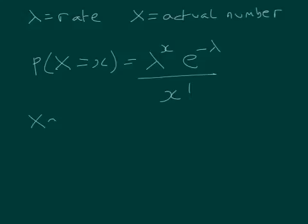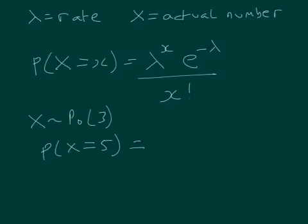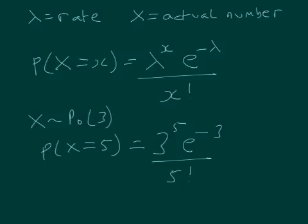For example, if we've got a Poisson distribution with lambda equal to 3 — so an event is occurring at an average rate of 3 — what's the probability that x equals 5? We say lambda is 3, so we substitute 3 in, and x is 5, so that x is 5. The formula becomes: 3 to the power 5, times e to the minus 3, over 5 factorial. We're finding the probability that the event occurs 5 times. Plugging that into the calculator works out to be 0.101.